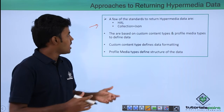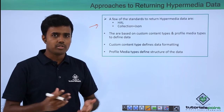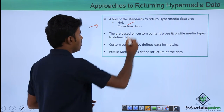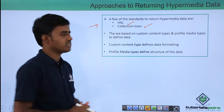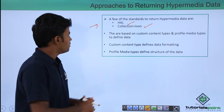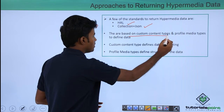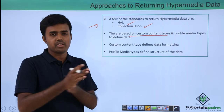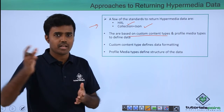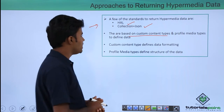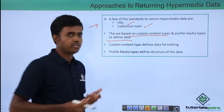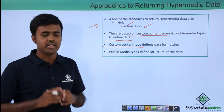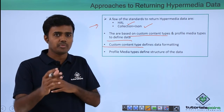But there are a few that have found a good amount of community support, and they are HAL and Collection+JSON. These two standards are based on custom content types — content types being things like application/json or application/xml — and profile media types, to basically define your data. The custom content type defines the data formatting: how the data has to be formatted to the user.